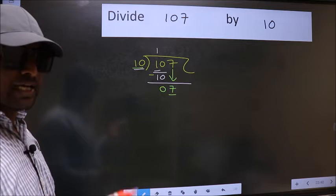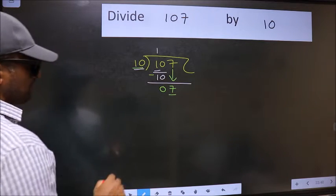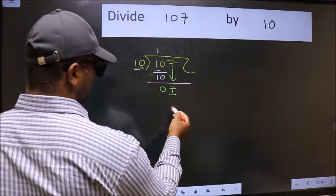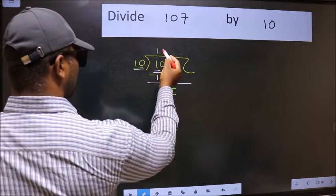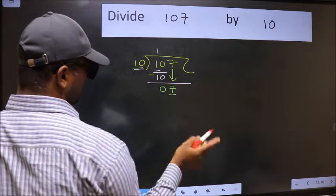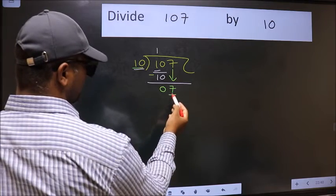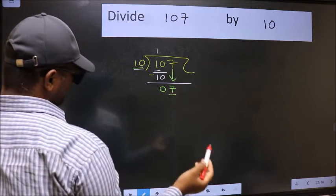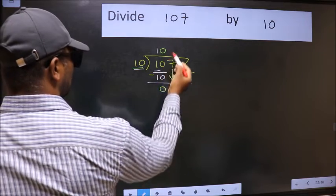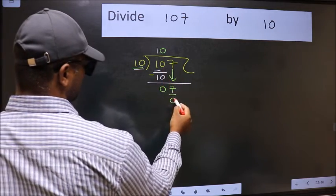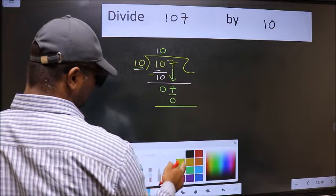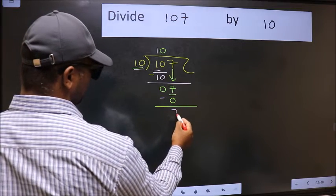Instead of that, what you should think of doing is, which number should we take here? If I take 1, we will get 10, but 10 is larger than 7. So what we should do is we should take 0. So 10 into 0, 0. Now we should subtract. We get 7.